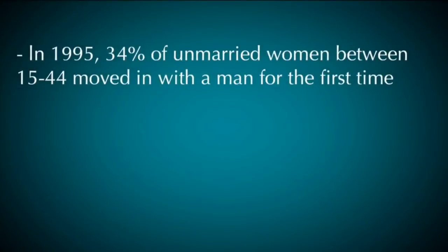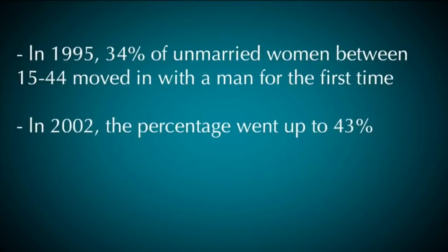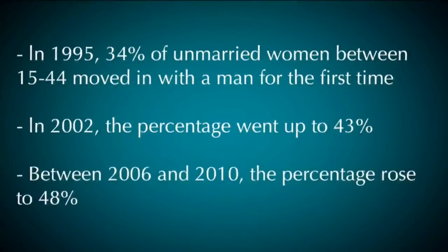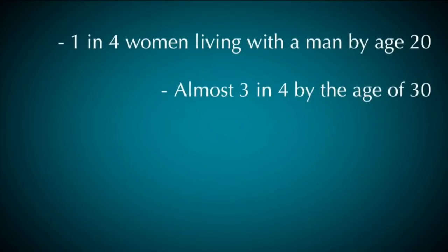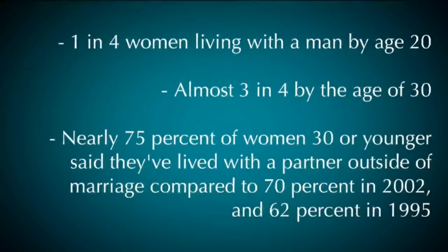Adultery and fornication are regarded as sin with severe repercussions. But today living together is very common. The Centers for Disease Control and National Center for Health Statistics reported in 1995 that 34 percent of unmarried women between 15 and 44 had moved in with a man for the first time. In 2002, the percentage went up to 43 percent. Between 2006 and 2010, the percentage rose to 48 percent — that works out to 1 in 4 women living with a man by age 20, and almost 3 in 4 by the age of 30.